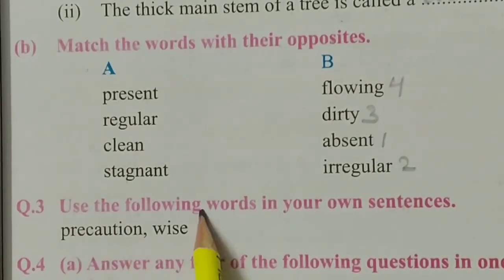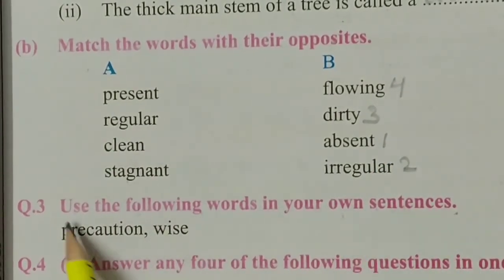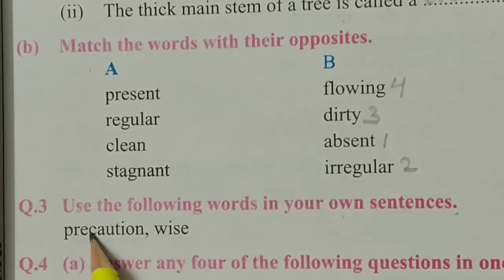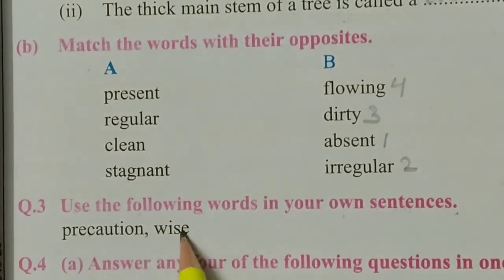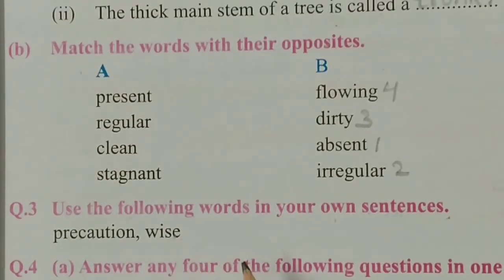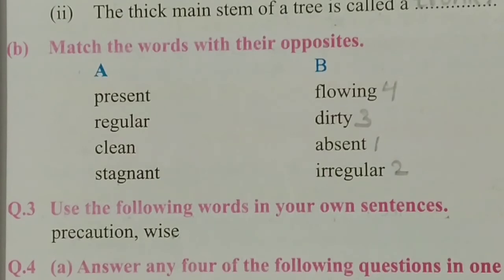Use the following words in your own sentences. Precaution: we should take precaution against malaria. Wise: old people are generally wise. So students, we have completed the grammatical questions of our practice test paper one. You have to write it in your notebook.